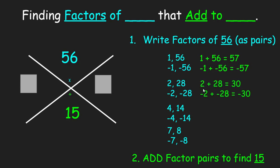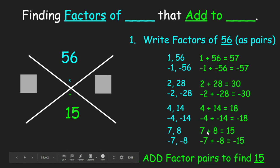2 plus 28 is 30, negative 2 and negative 28 is negative 30. 4 and 14 give us 18, negative 4 and negative 14 give me negative 18. We're getting closer. Hopefully one of these works, and what ends up happening is 7 plus 8 is 15, negative 7 and negative 8 is negative 15.